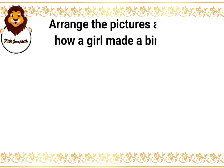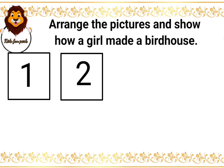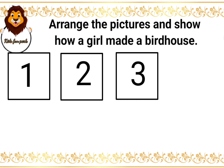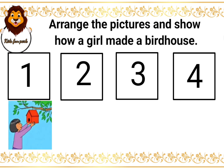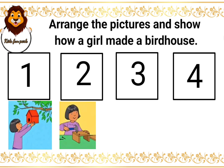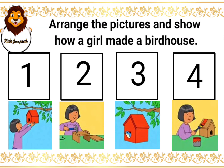Arrange the pictures and show how a girl made a birdhouse. The options are: the girl has stuck the birdhouse on the tree; she built the birdhouse; the bird lived happily in the birdhouse; she has painted the birdhouse.